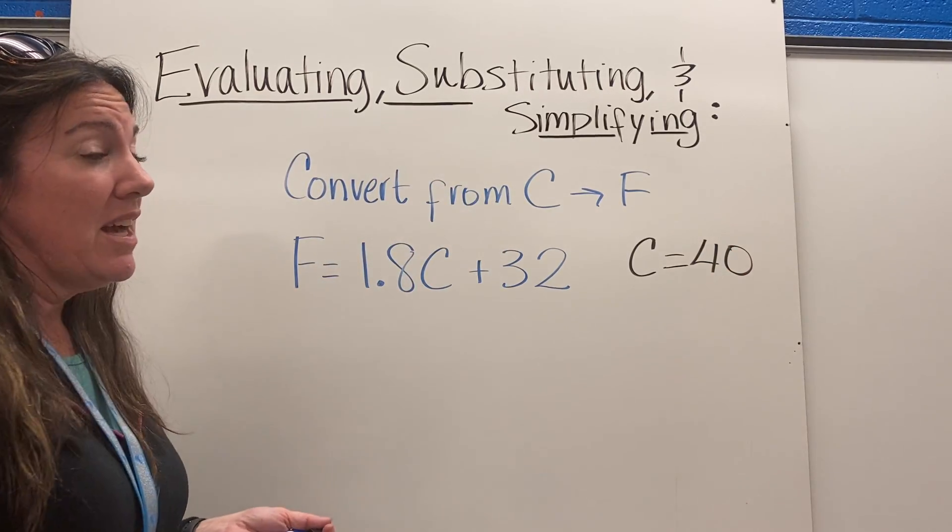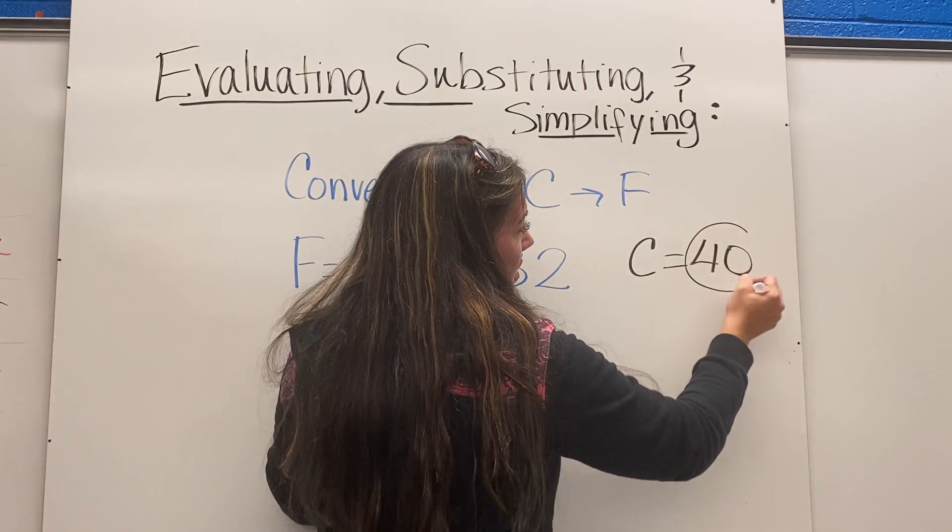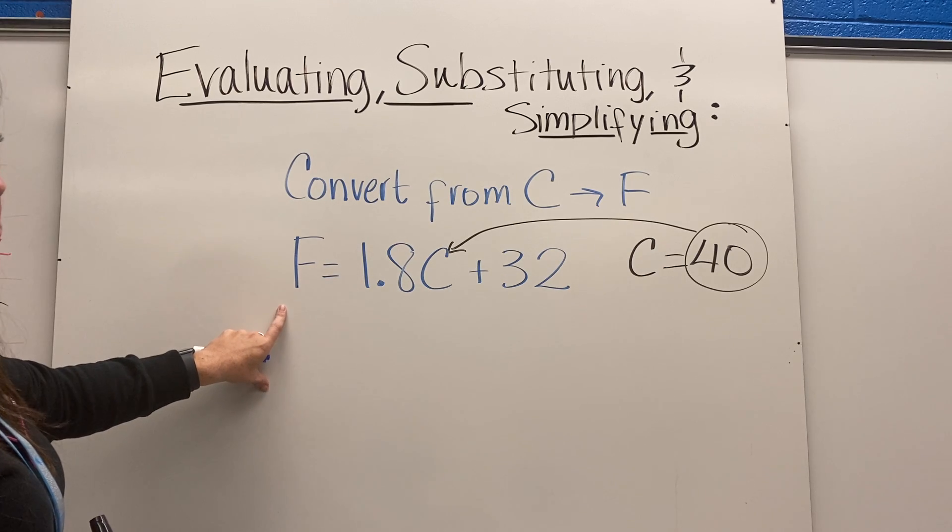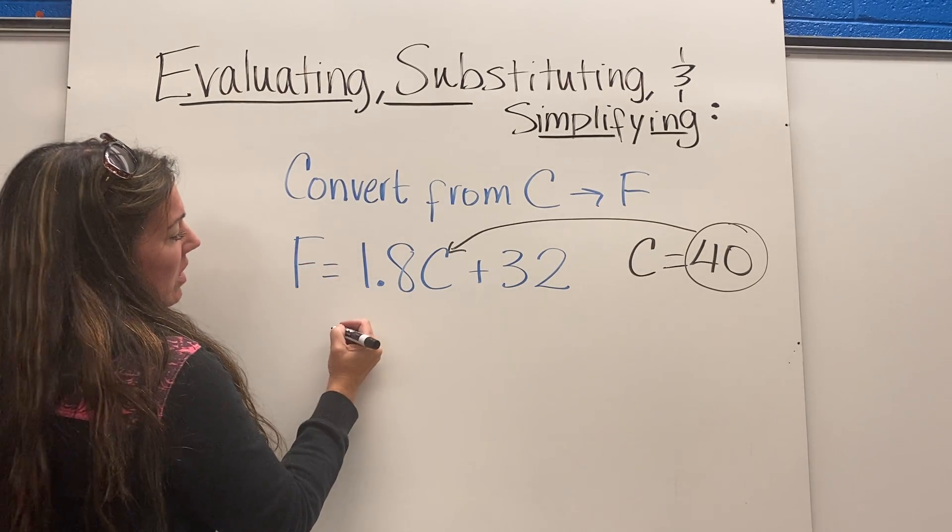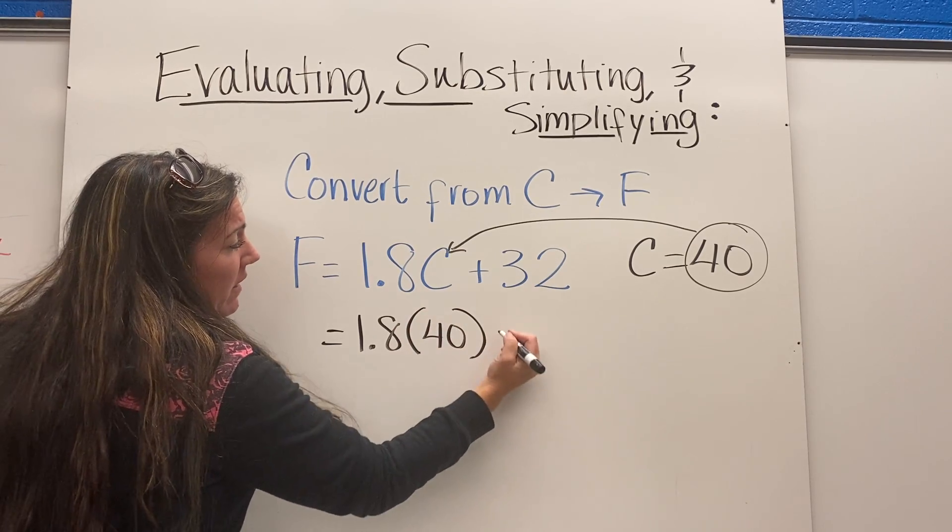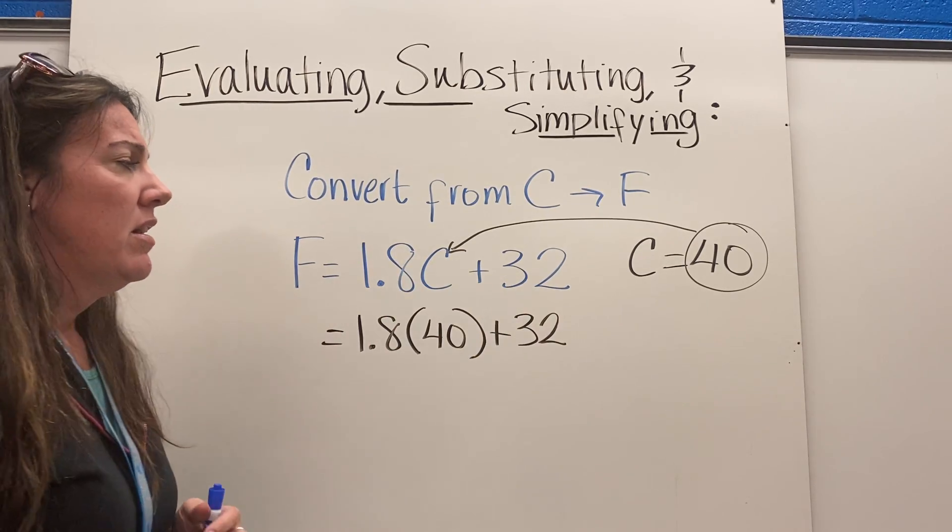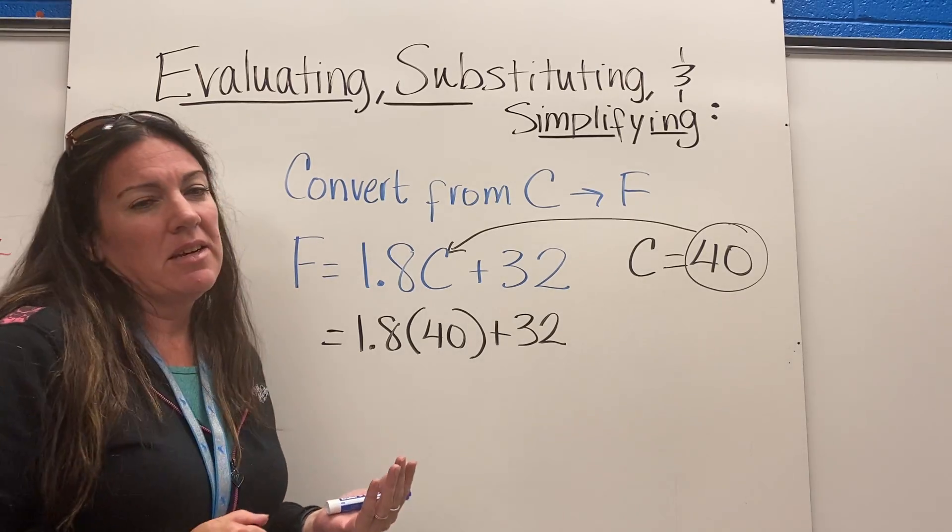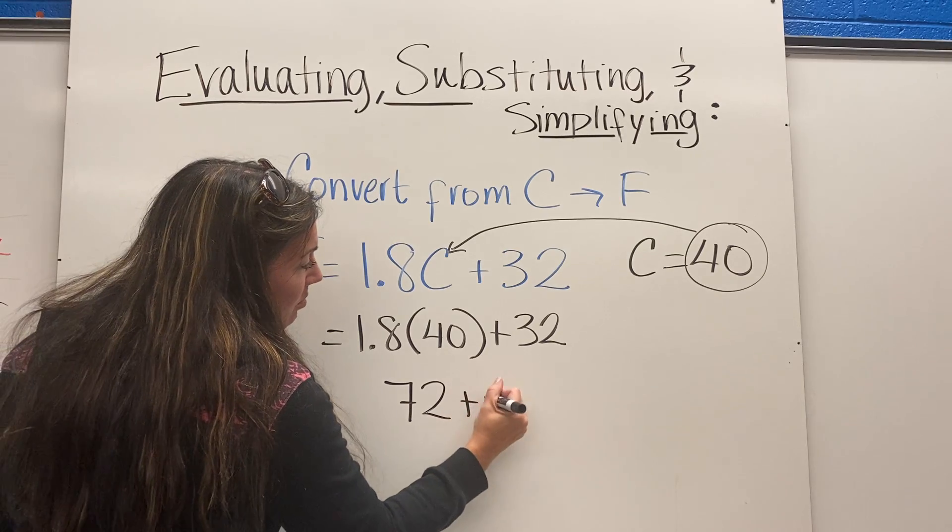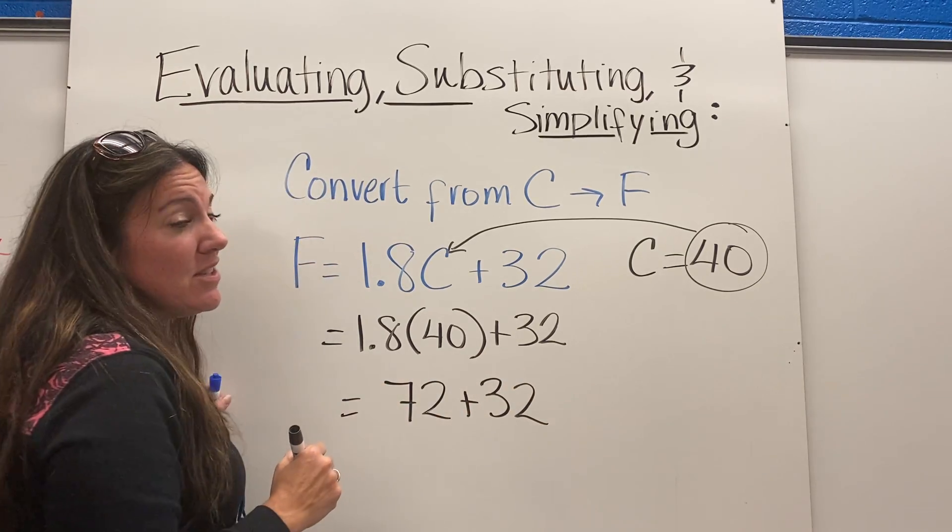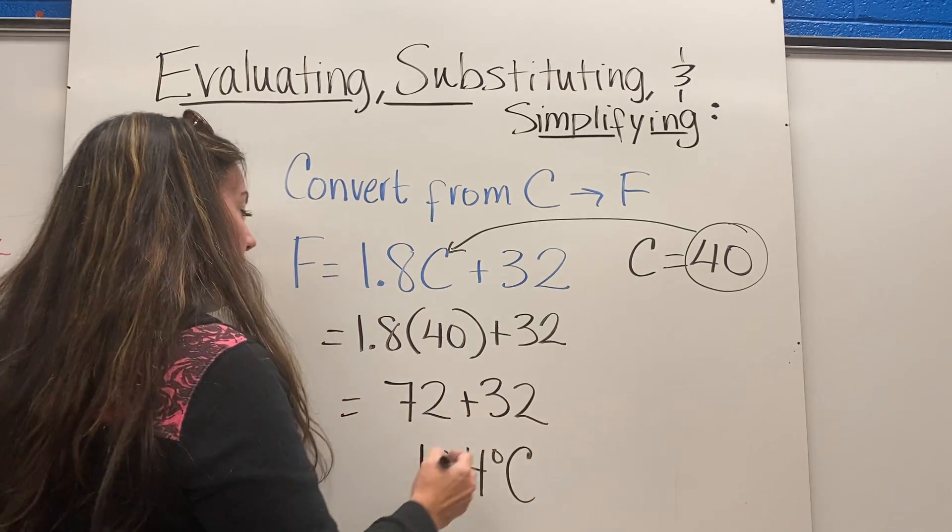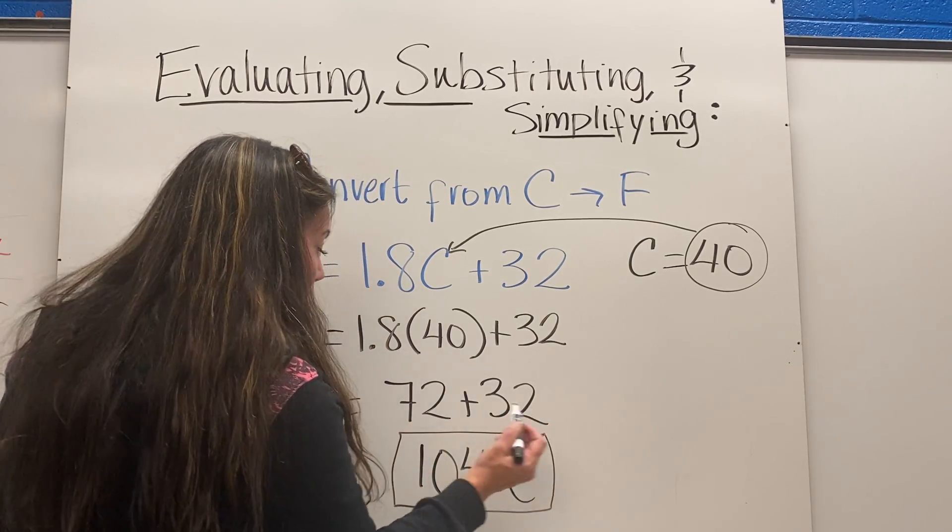Much like the last one we did, we'll just substitute this in for C right there so we can find out what our answer is, which would be F. So it's 1.8 times 40 plus 32. 1.8 times 40 is 72. 72 plus 32 is a scorching 104 degrees, which I was not totally ready for coming from the upper peninsula.